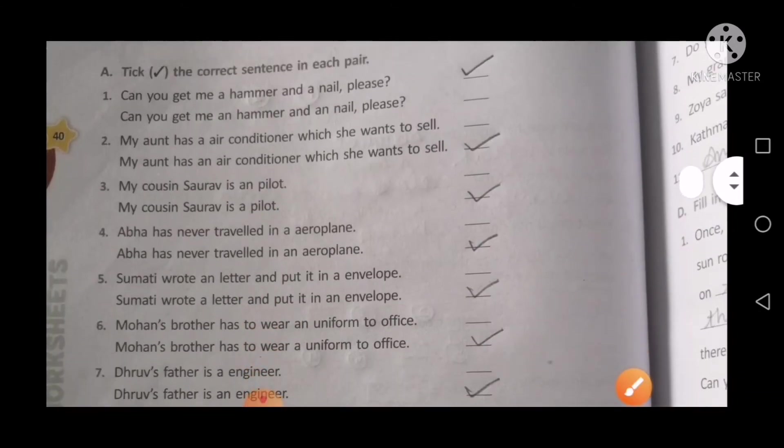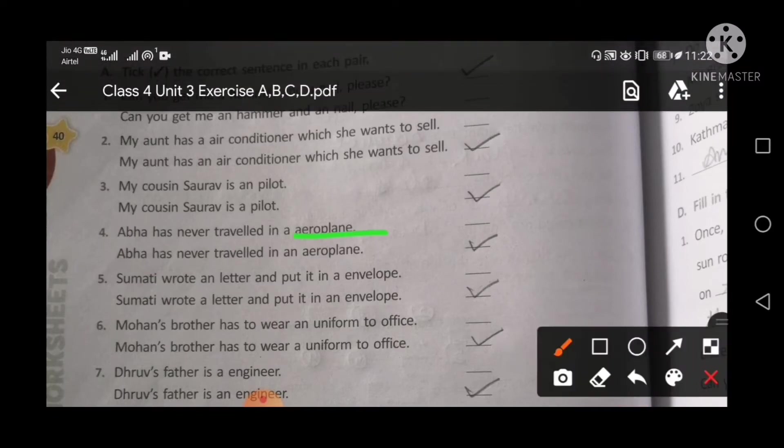Next is, Abha has never travelled in an aeroplane. Abha has never travelled in an aeroplane. You know, aeroplane starts with the vowel, so we use here an. It is right.